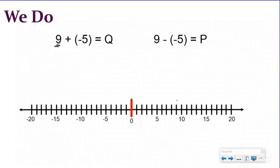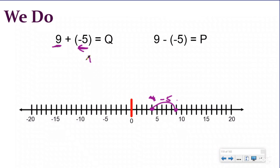For our next I Do problem, we're starting at positive nine and we're going to be adding a negative. So we move five units to the left — that's what the negative sign tells us — and we end up at positive four. So q equals four.